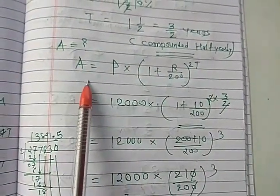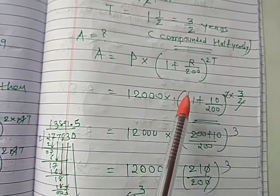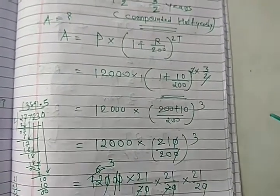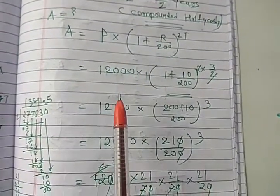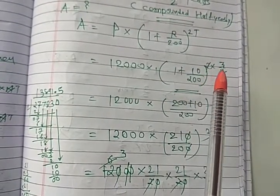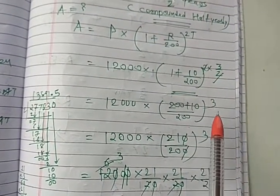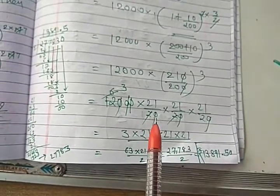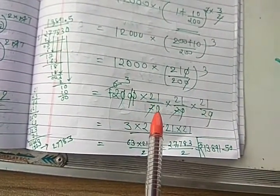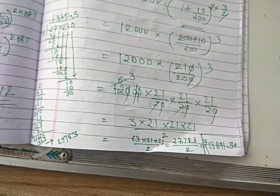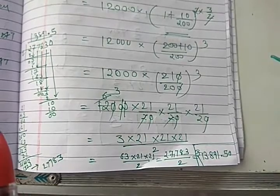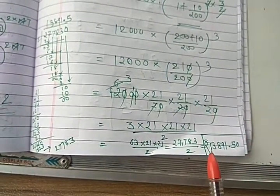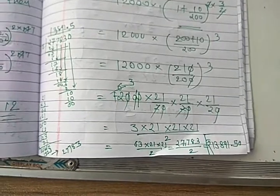So you have to use this half yearly formula. A is equal to P into 1 plus R upon 200 raise to 2T. So formula use half yearly, remaining all are same. Here 12,000, 1 plus 10 upon 200 raise to 2 into T 3 upon 2. Here 2, 2 cancel, so it becomes 3. So 210, take LCM. So simplify 21 upon 20 raise to 3. Means 12,000, 21 upon 20, 3 times you have to write because power 3. So calculation, I have done side calculation. You will get amount 13,891.50.